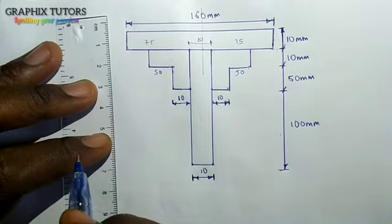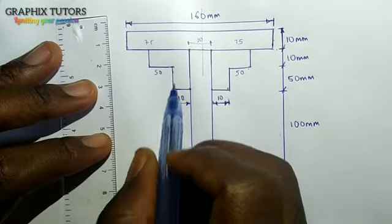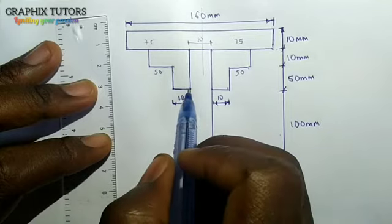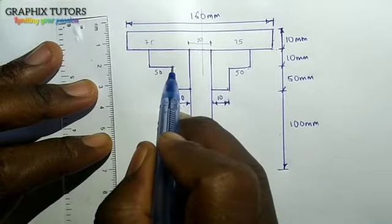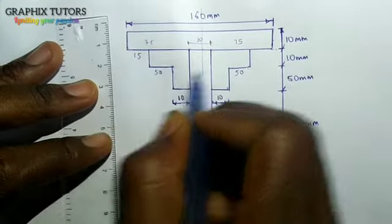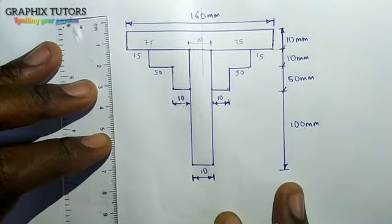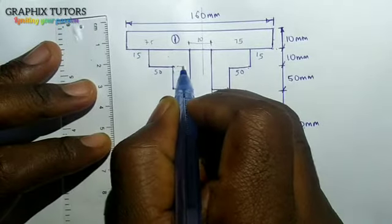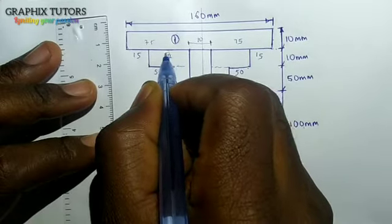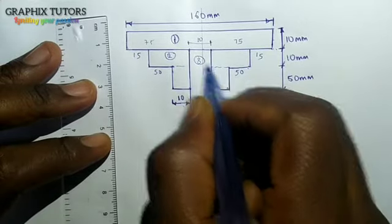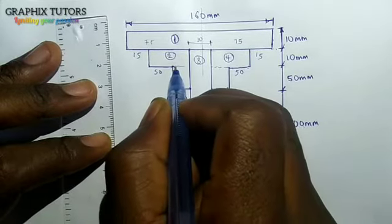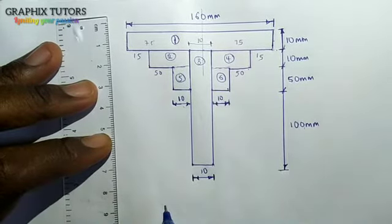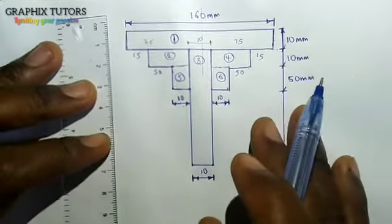From here to here is 65. If I remove 10 from 75, that means from here to here is 60 — 10 plus 50 is 60. Then 60 minus 75 means this point here is 15, and here also is 15. So this is how I want to split them. I can say this is figure 1, this is figure 2 if I divide it horizontally, this is figure 3, figure 4, figure 5, and figure 6.